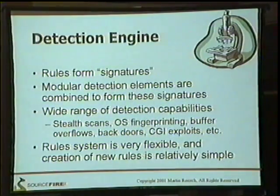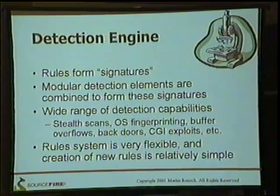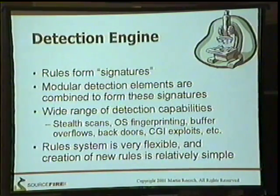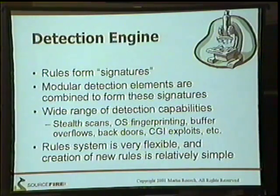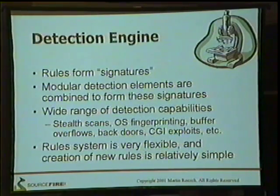Snort has a wide range of detection capabilities: stealth scans, OS fingerprinting, buffer overflows, backdoors, CGI exploits. With the new stateful inspection system, we can pick up NMAP OS fingerprinting statefully — running it through a state machine rather than just packet-based pickups. We can also pick up ECN traffic explicitly. There were problems when the Linux 2.4 kernel came out with ECN using the reserve bits of TCP flags, which was setting Snort off because we were watching for XMAS scans using the same bits. Now we can flag ECN traffic explicitly so the rules can distinguish it from a XMAS scan.